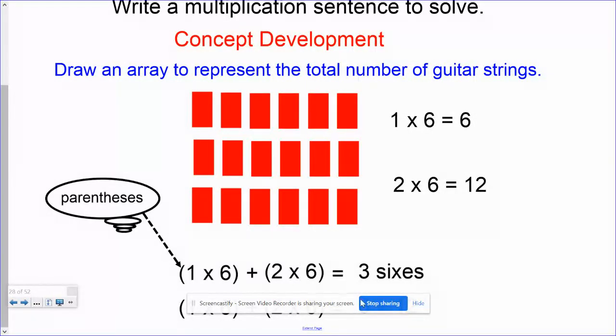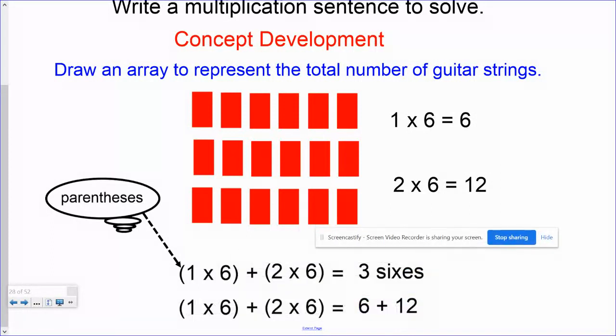So, if I take a look at it here, it also can be written as one times six, plus two times six, which is just six plus twelve. So, like I said, it's just simply a way of breaking apart an array to make it a little bit easier.